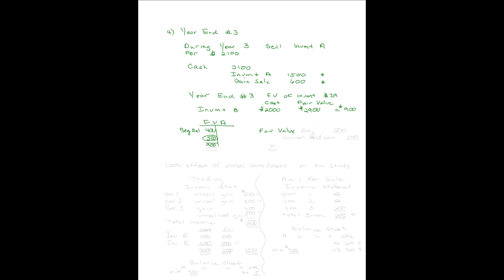Let's bring forward the fair value adjustment account. Last year we left it at $400, so its beginning balance is $400. I now need the balance to be $900. To get from $400 to $900, I need to put in $500. I debit Fair Value Adjustment $500 and credit Unrealized Holding Gain $500. The fair value account is adjusted at year-end to whatever it needs to be.